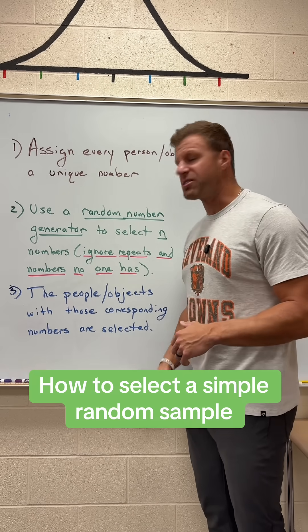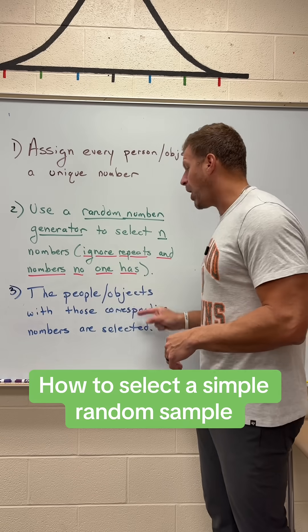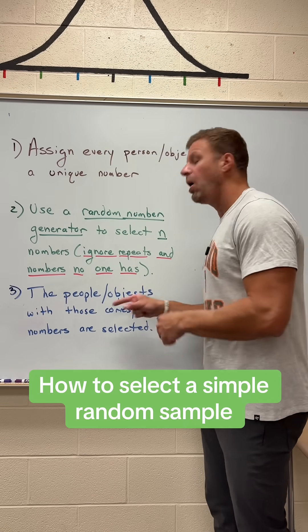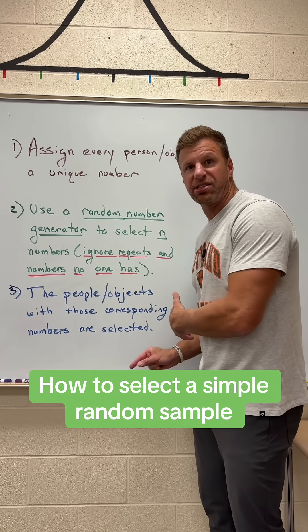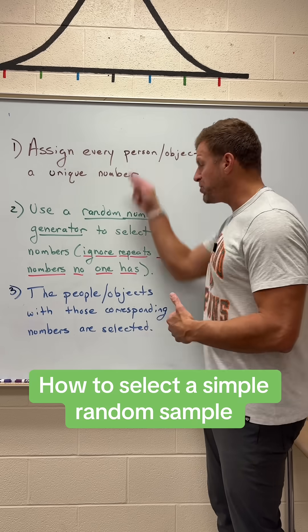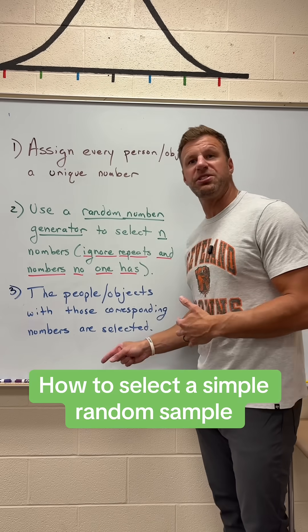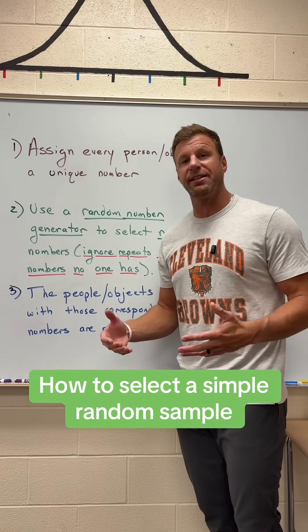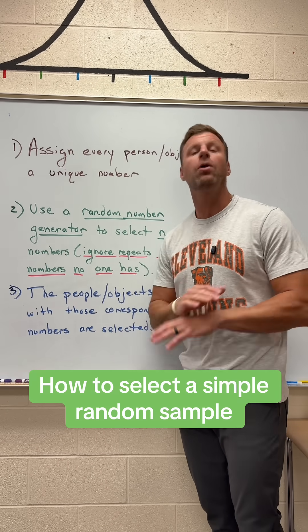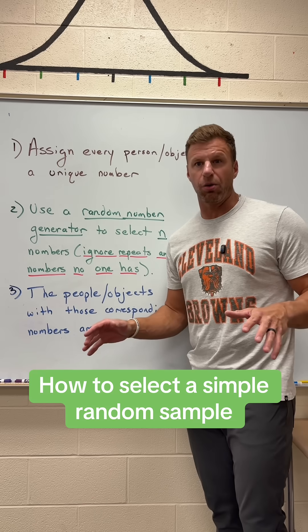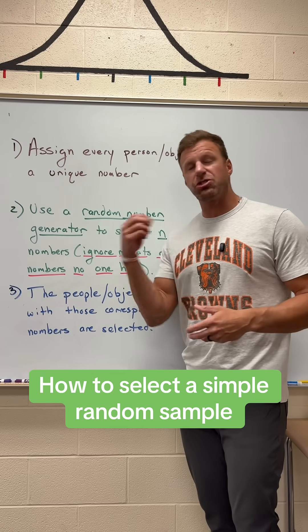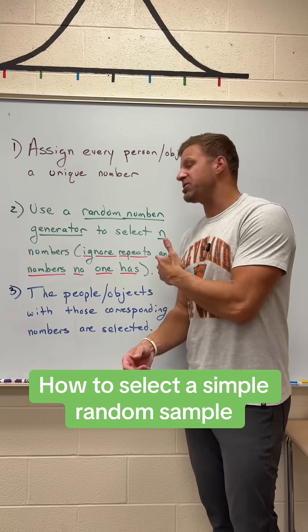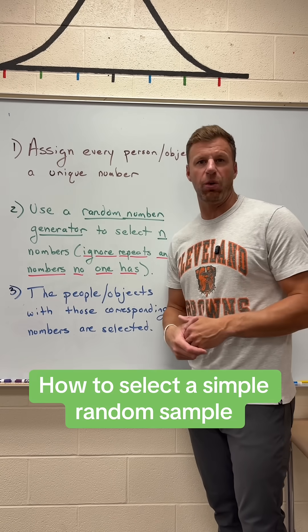Finally, the third step: the people or objects with those corresponding numbers are actually selected. If you follow these three steps when conducting a simple random sample, you cannot go wrong. Even though pulling names out of a hat works, this method works a lot better.